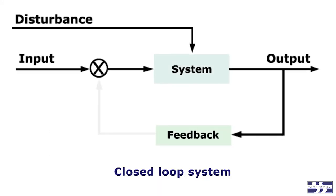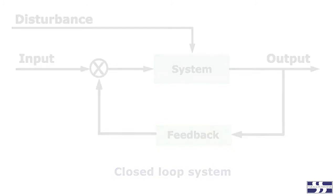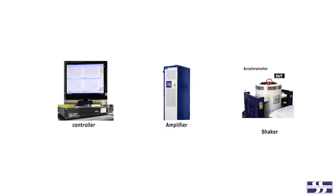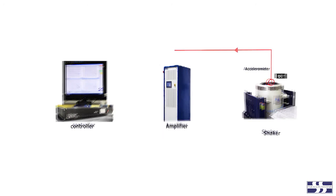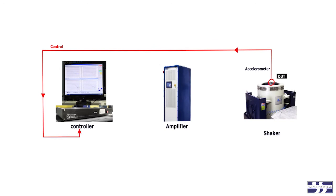The controller operates as a closed loop system. In its most basic form, this control system receives a signal from an accelerometer which is mounted to the shaker armature. From this signal, the controller determines the acceleration and frequency which are present at the armature, compares this with what they are supposed to be in the test profile, and adjusts an analog drive signal which feeds the amplifier.